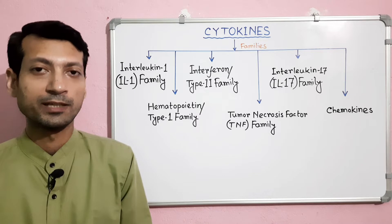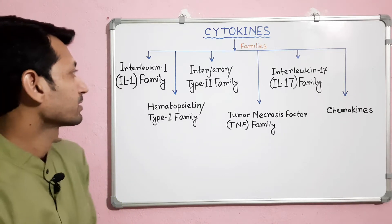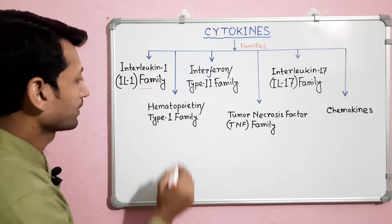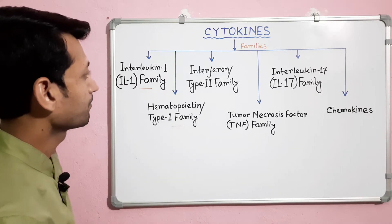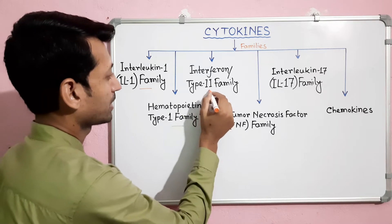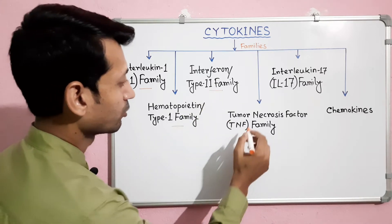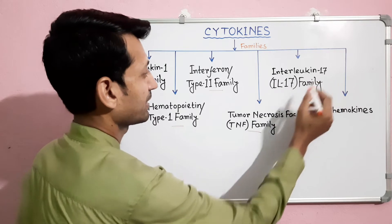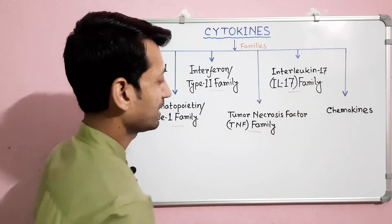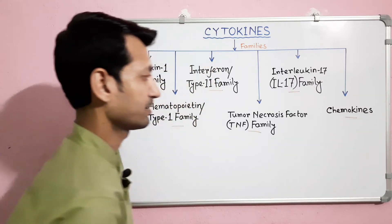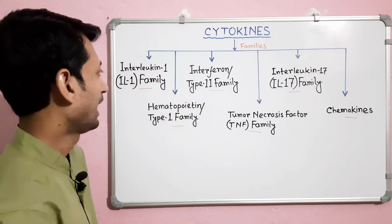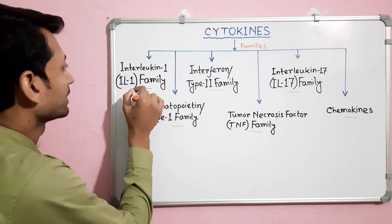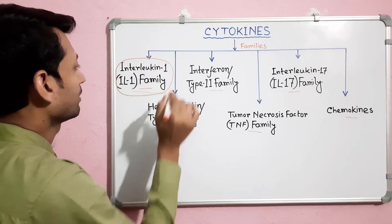Cytokines are grouped into 6 major families. They are: the interleukin-1 or IL-1 family, hematopoietin or type 1 family, interferon or type 2 family, tumor necrosis factor or TNF family, interleukin-17 or IL-17 family, and finally chemokines. Today in this video I will discuss the cytokines and their characteristic features of the IL-1 family.